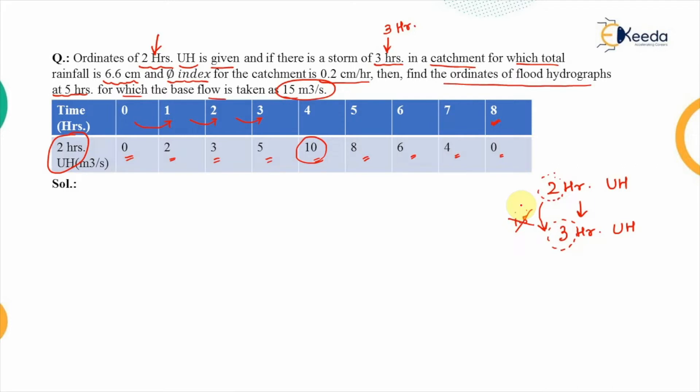In such cases, when we have a fractional relationship between the two durations, we use the method of the S-curve. This is the first step: to check whether we will use the S-curve or not.